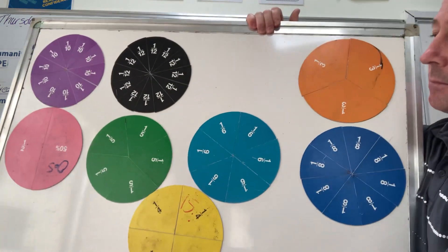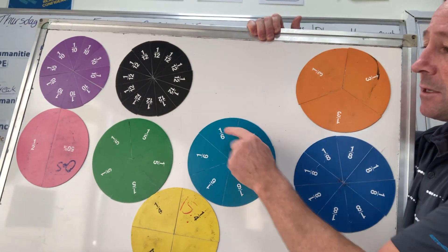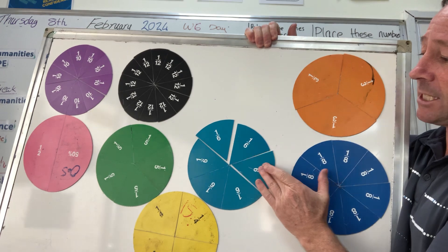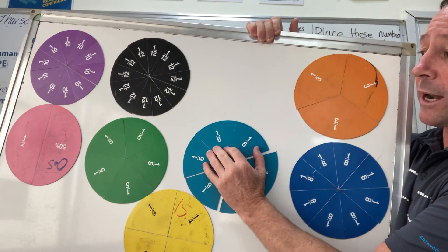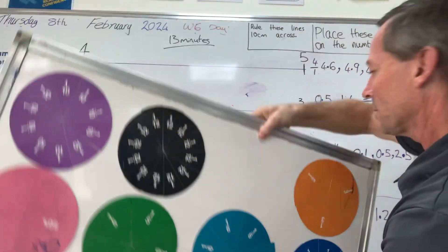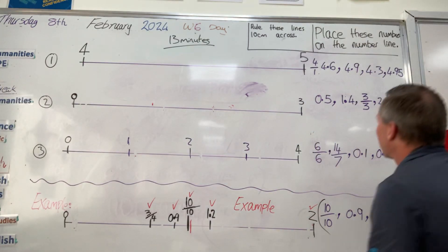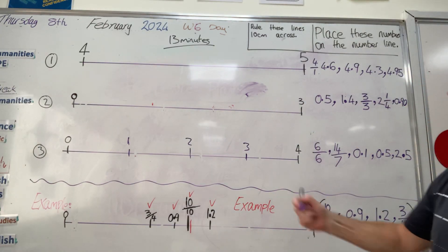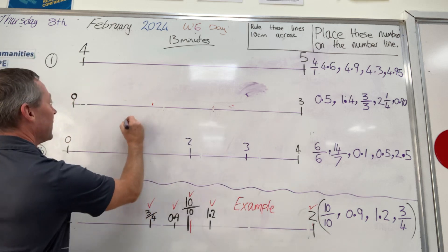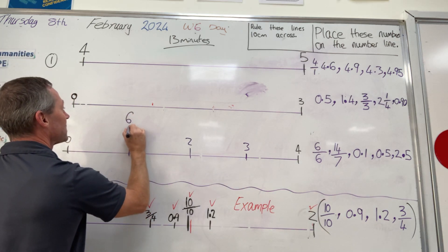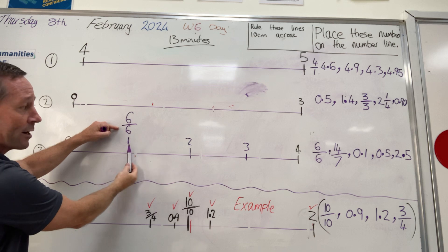This one here. This one here. This one here. I've got 1/6, 2/6, 3/6, 4/6, 5/6, 6/6 equal to one whole. So that's equal one. 6/6, I would place here. 6/6 is equal to one whole.